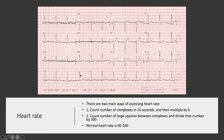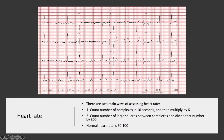Count each heartbeat — in other words each QRS complex — in 10 seconds, and then multiply by 6, which gives you the heart rate over a minute. In this example there are 12 QRS complexes in 10 seconds, and multiplying by 6 you get a heart rate of 72, which is within the normal limits.